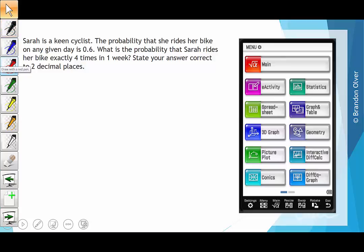So we're going to define success as Sarah riding her bike, which means the probability of success is 0.6. We're going to use the formula that the probability that the random variable X is equal to x equals nCx times the probability of success raised to the number of successes, times the probability of a failure, which is 1 minus p, to the number of trials minus the successes.